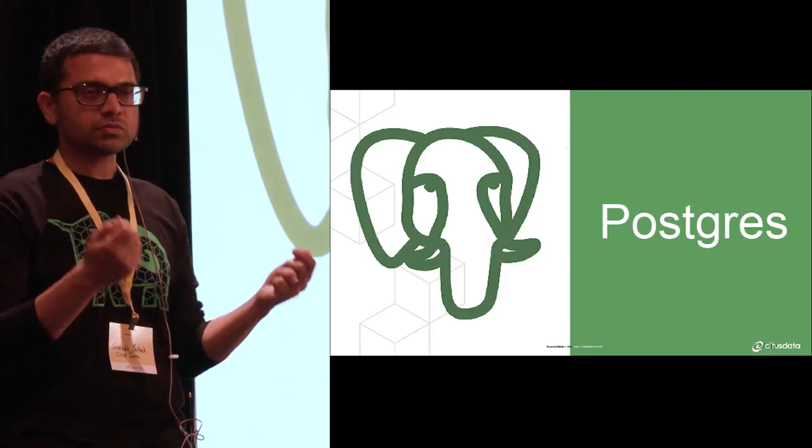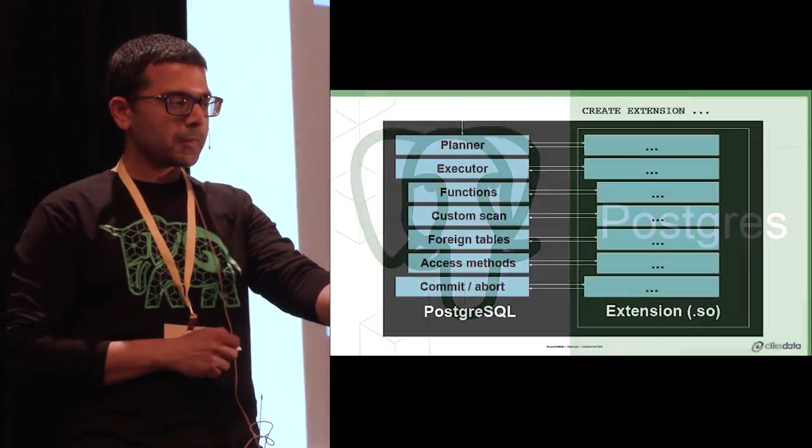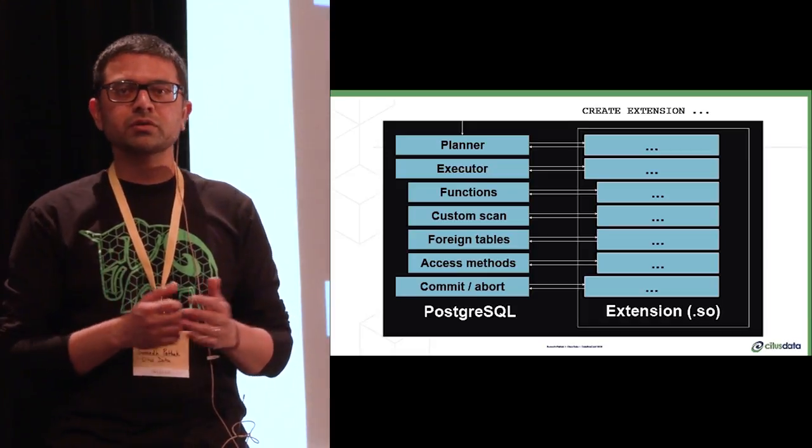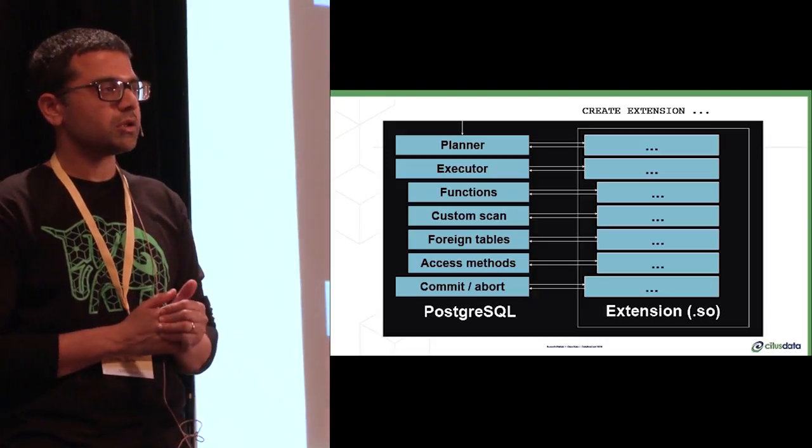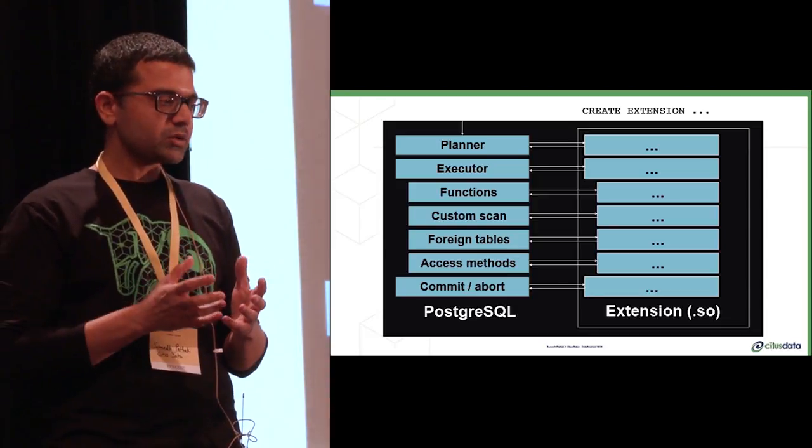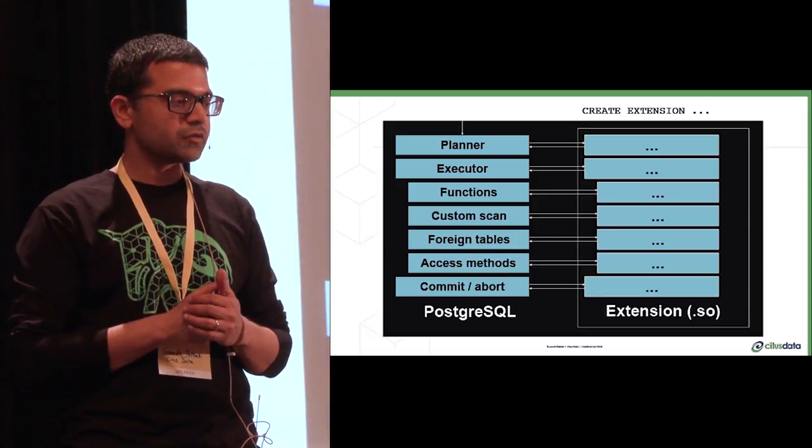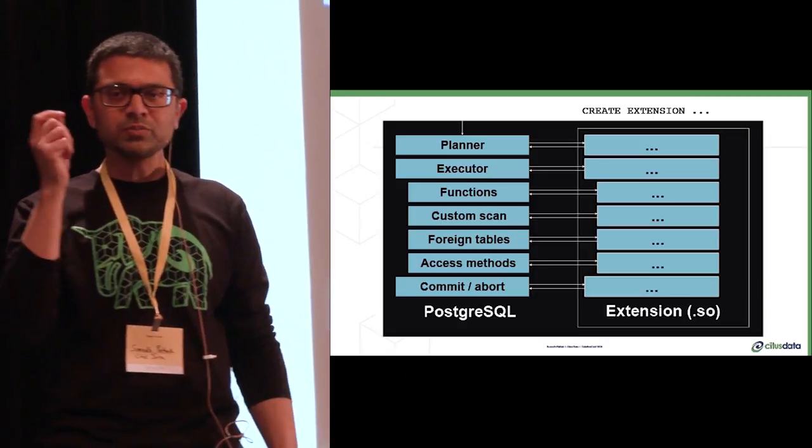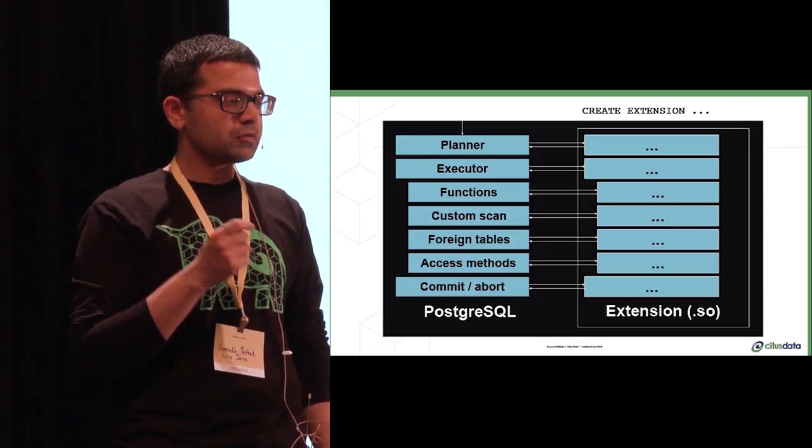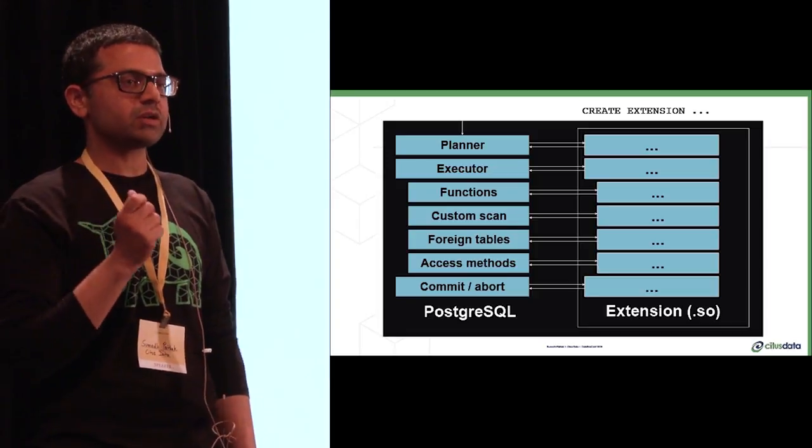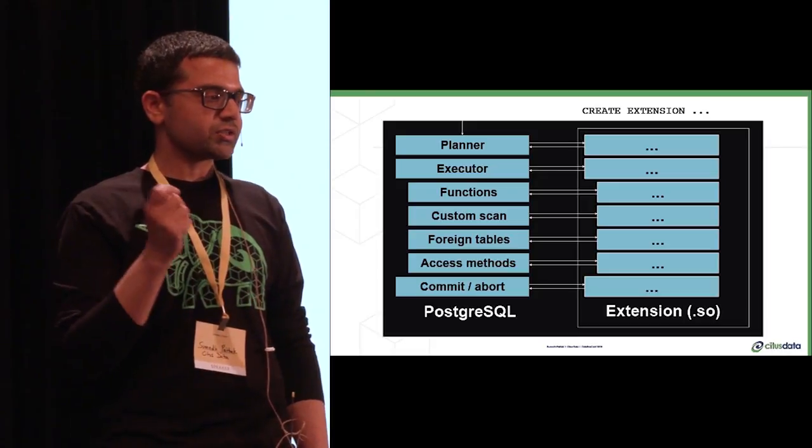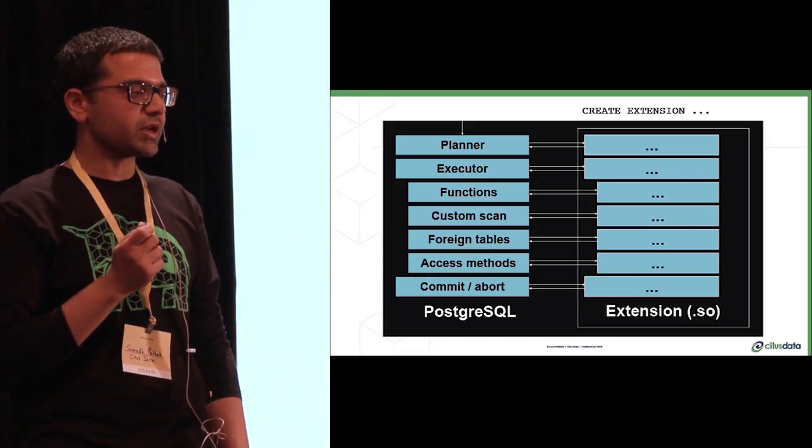PostgreSQL has a very modular code base. This has led to a lot of forks of it. For example, Redshift is a fork of Postgres from several versions back, as was Greenplum. This modularity was later formalized and commoditized in the form of extension APIs. You can now replace any parts of the query execution pipeline, from the planner to various parts of the executor. For example, you can change the storage mechanism using the foreign tables API, and we did that to add columnar storage. Or you can use the transaction callbacks to provide some of the distributed transaction guarantees that we need.